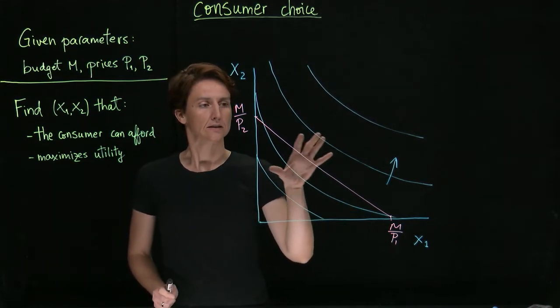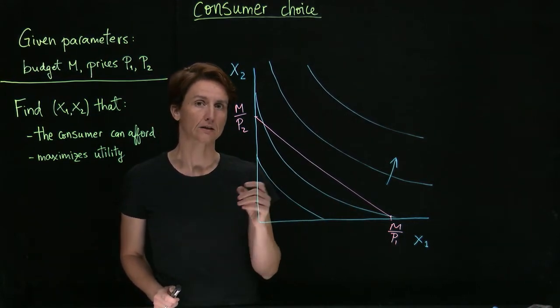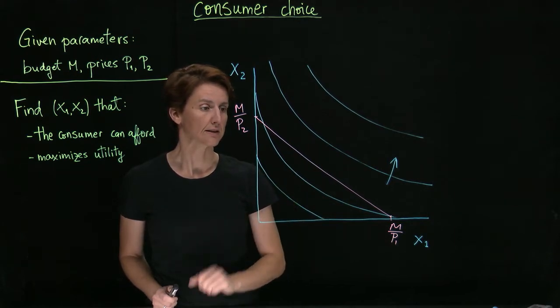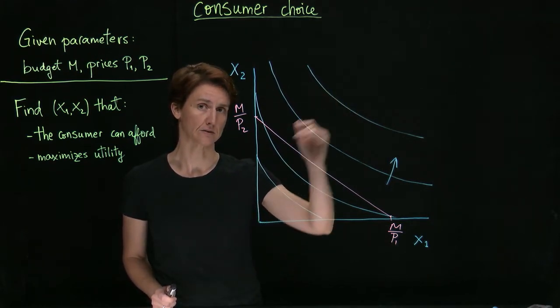The other aim is to maximize utility. In this graph, the way to find the maximum utility is to look for the highest indifference curve.